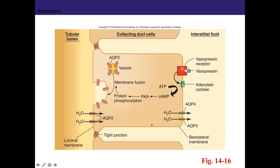With aquaporin-2 inserted, there's now a pathway for water to be reabsorbed, allowing you to concentrate urine. Alcohol inhibits vasopressin. A head injury can also knock out your ability to produce vasopressin — that's called neurogenic diabetes insipidus. Nephrogenic diabetes insipidus means something is wrong with the vasopressin receptor in the kidney.